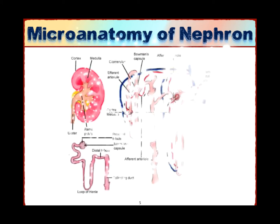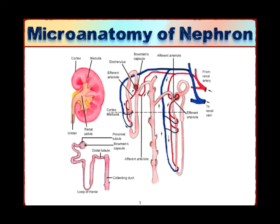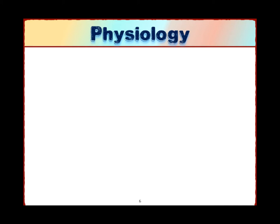If we look deeply inside the kidneys at the nephrons, being the functional unit of the renal system, there is a very complex system where the blood goes through different loops and different structures in order for filtration to take place.